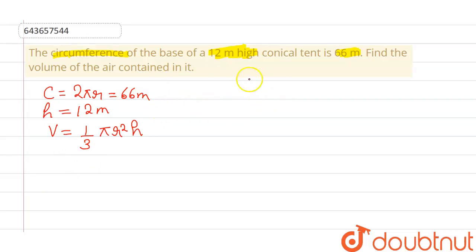Now from here if we want, we can find the value of r. r will be equal to 66 divided by 2 into π. Instead of π we can write 22 by 7. r will be equal to 21 by 2.